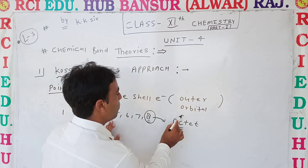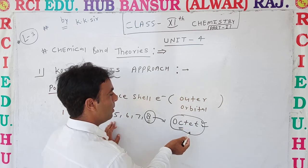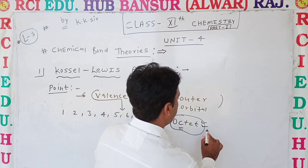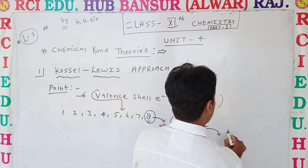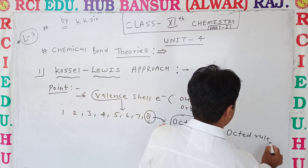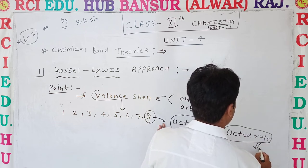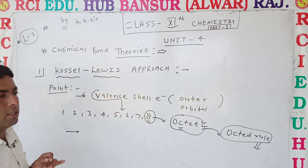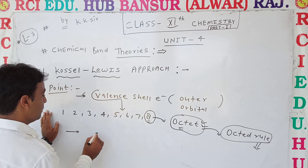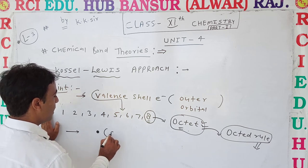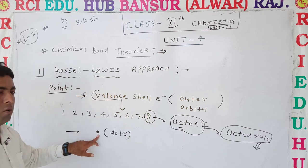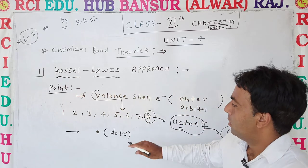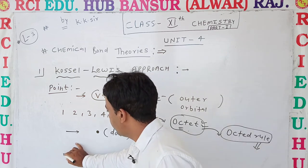The next point of the Kossel-Lewis theory is the octet rule — the octet may be complete or incomplete, and valence electrons depend on the octet. This concept is called the octet rule. According to Lewis, electrons are represented by dots. Lewis represents electrons using dot symbols, called Lewis dot structures.